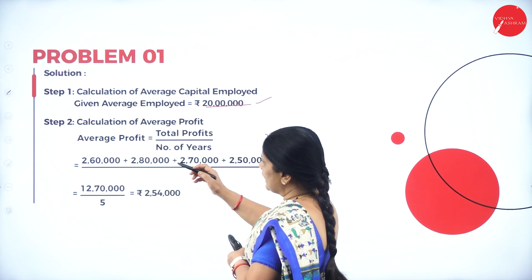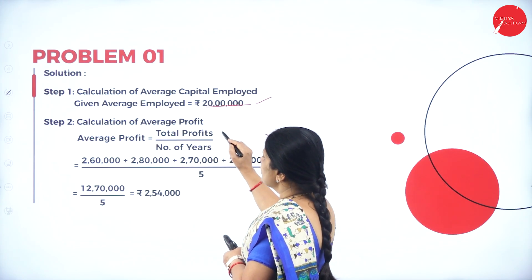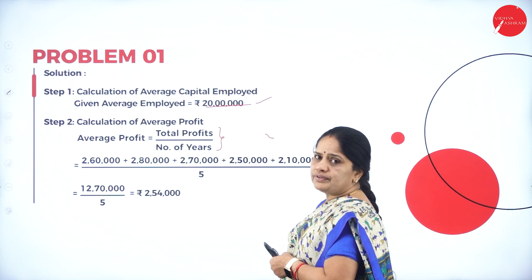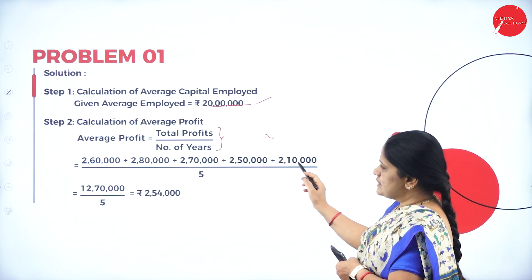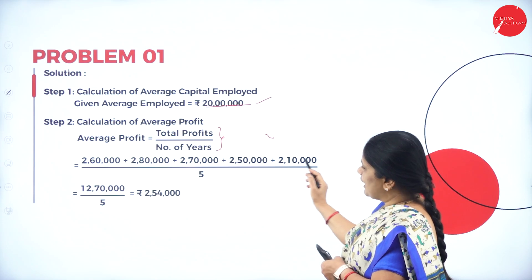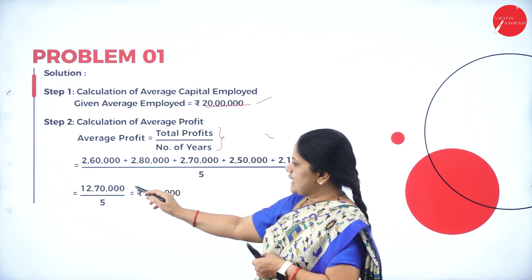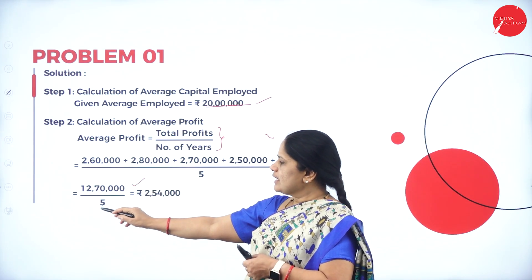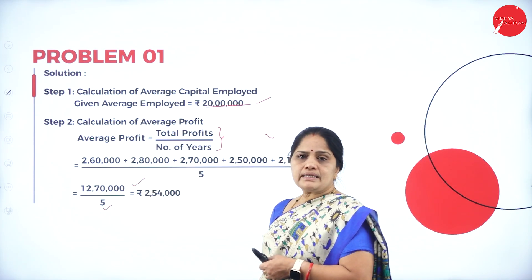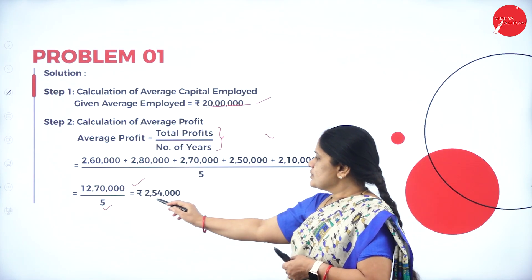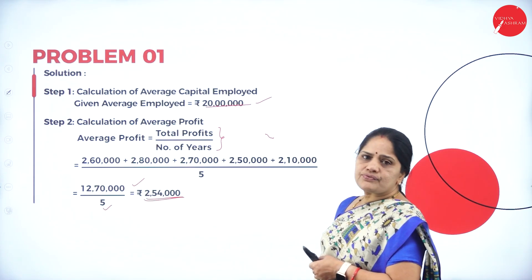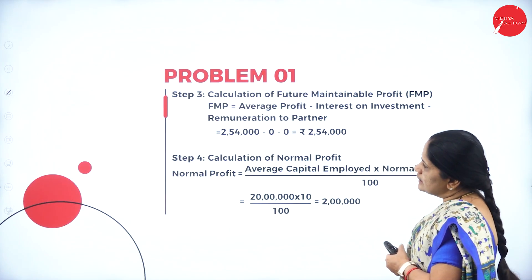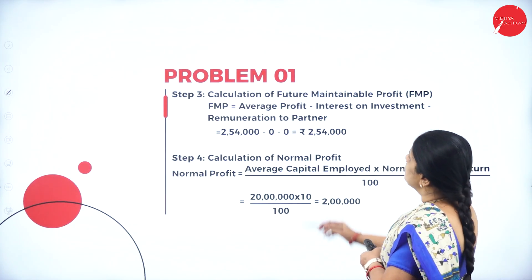Next, calculation of average profit: total profit divided by number of years. Adding all five years' profits gives 12 lakhs 70,000, divided by five years, so the average profit is 2 lakhs 54,000.